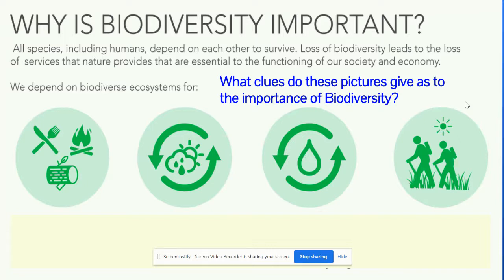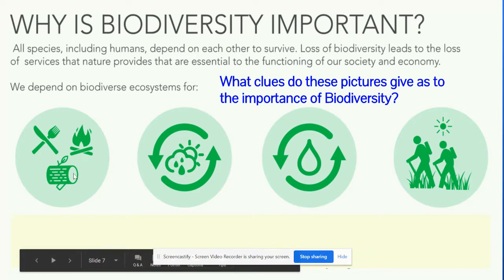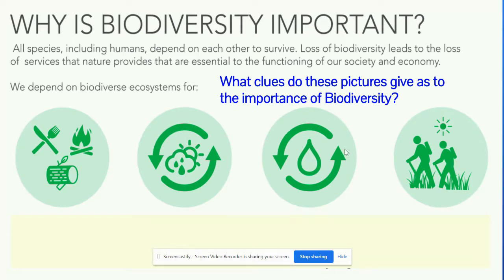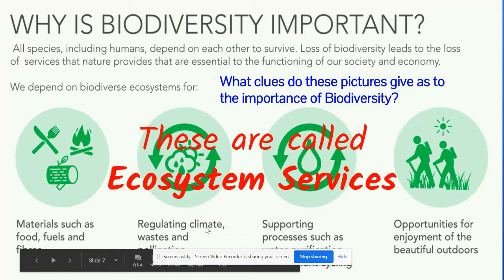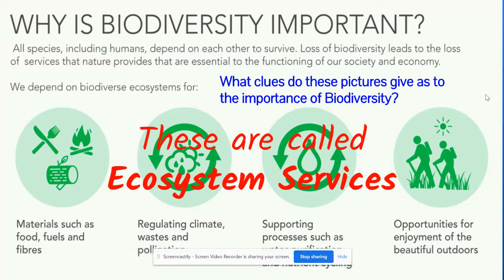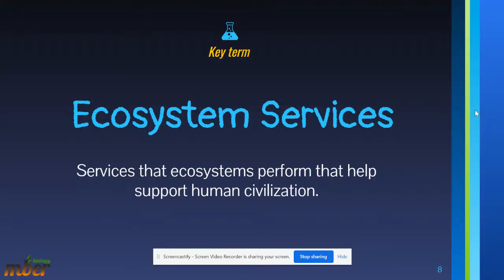We depend on ecosystems for food, fuel, stabilization of our weather, stabilization of our water supply, and nature also provides us with beauty we get to experience. Materials such as food, fuel, resources, fibers, regulating climate, waste and pollution, supporting processes such as water purification and the nutrient cycle, and opportunities for enjoyment of the beautiful outdoors.